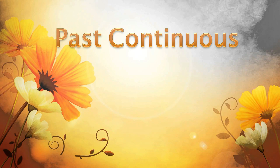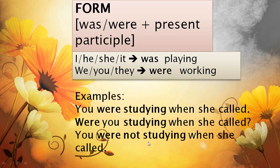Hello everyone, welcome again. Let's talk about the past continuous. Its form is was or were plus verb-ing, also called the present participle. I, he, she, it take 'was' plus the verb-ing: I was playing, he was playing, she was playing, it was working. We, you, they take 'were' because they are plural: we were working, you were working, they were working.